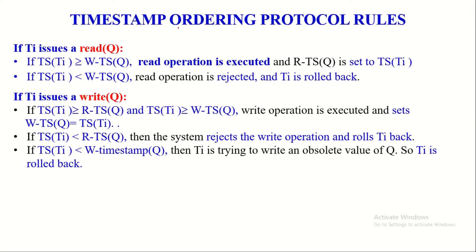Let us now discuss what are timestamp ordering protocol rules. Timestamp ordering protocol is one of the timestamp based protocols. It is used to ensure the conflict serializability of the transactions in the given non-serial schedule by applying its own rules. Let us now apply these rules to ensure either the read and write operation of a transaction can be permitted to execute or not.